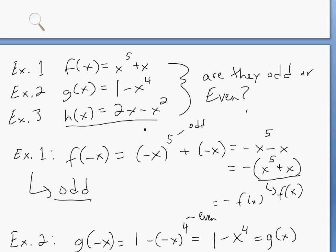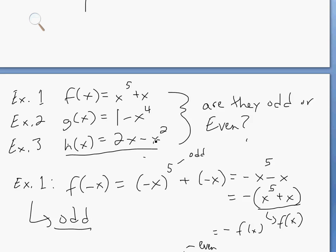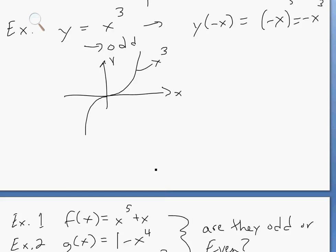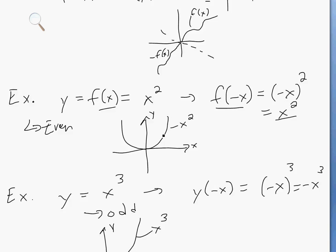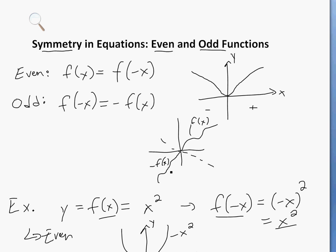So that's basically even and odd functions. Even means f of negative x equals f of x, and odd means f of negative x equals negative f of x. Hopefully you learned something — stay tuned for another math easy solution.